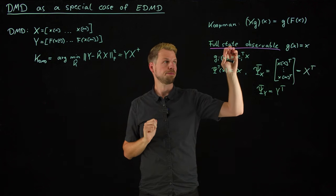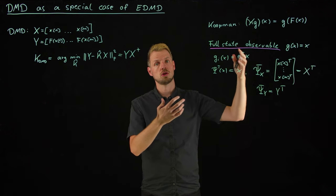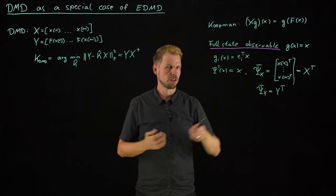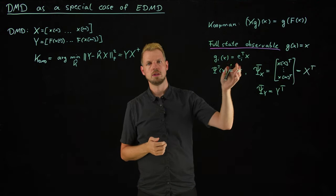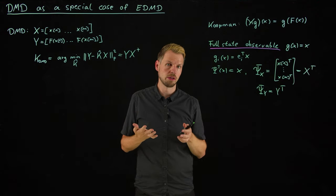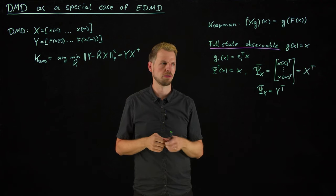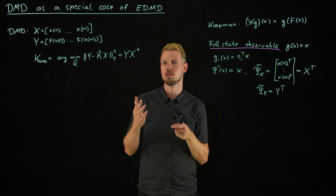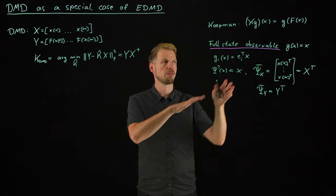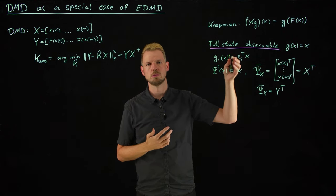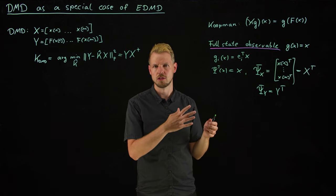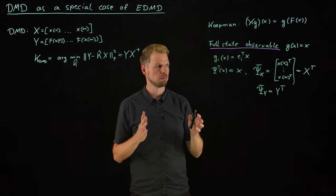And we have talked about the Koopman operator or EDMD being very sensitive to the selection of the dictionary. So if we're thinking about true approximation of the Koopman operator, this dictionary is often a very poor choice because it's simply a linear dictionary. So it's very restrictive, only works for linear systems. However, we can still try to extract these modes. One should be careful in saying that this is really a Koopman operator approximation.